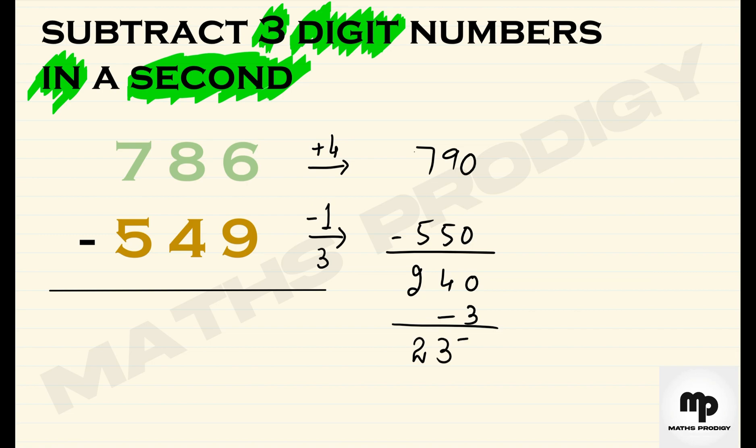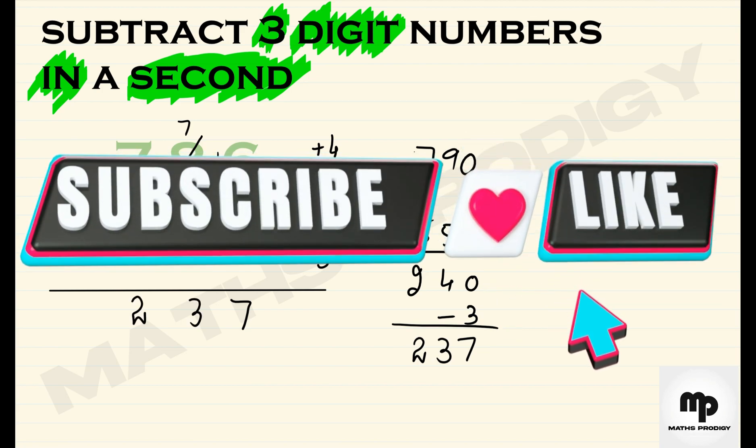You can check that. I will always start from ones place, and I can't subtract because 9 is big and 6 is small. I will take help of 8 and it will be 16 minus 9 is 7, 7 minus 4 is 3, and 7 minus 5 is 2. Here you go.